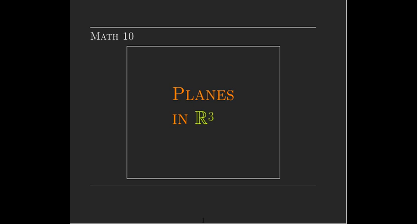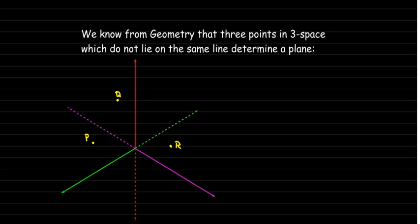In this video, we're going to explore planes in R3. Let's do a little review from geometry. A plane, you think of it as a two-dimensional figure — maybe an infinite piece of paper. It's completely flat and goes out in all directions infinitely. In order to determine a plane, you need three points that do not lie on the same line.